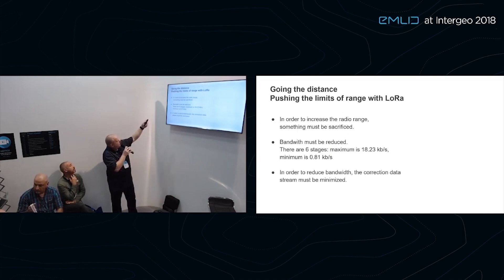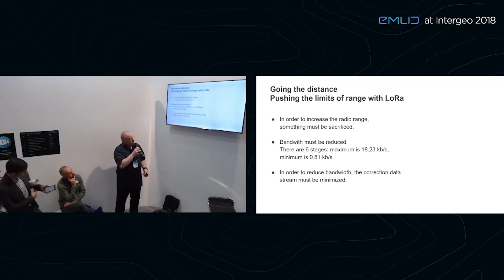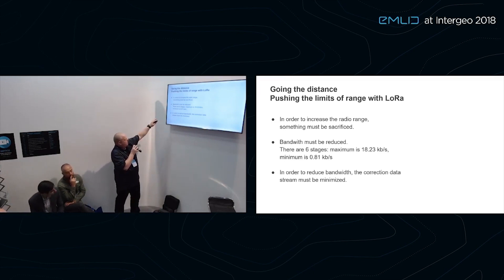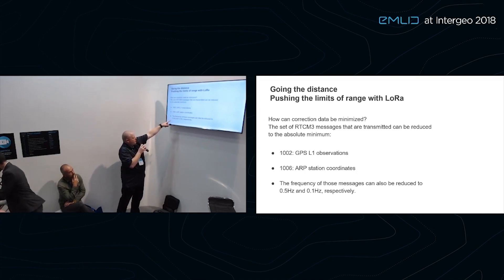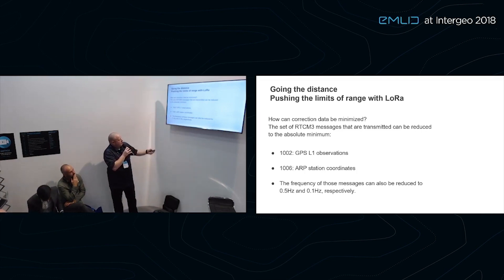Now, in order to increase the range, something must be sacrificed. What we're going to do is reduce the bandwidth. Normally, we'd be operating at full bandwidth, which is 18 kilobits a second. And we'd have maximum RTCM3 messages. We're going to reduce that down to close to the minimum. Minimum is 0.81. When we're going to minimize the data, we need to minimize the amount of messages. You can go with just GPS L1 and your station coordinates. That is just the bare bones minimum. We're going to reduce our transmission rate of those messages, GPS at half hertz, once every two seconds. And the station coordinates will come through at 0.1 hertz, once every 10 seconds.